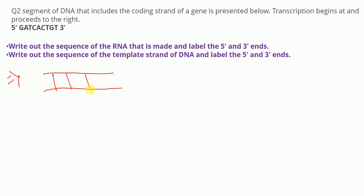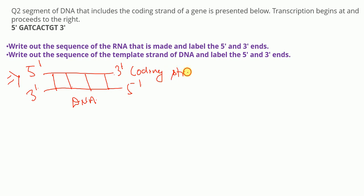In a DNA molecule, two strands run antiparallel. The strand running from 5 prime to 3 prime is called the coding strand, while the strand running from 3 prime to 5 prime is called the template strand.